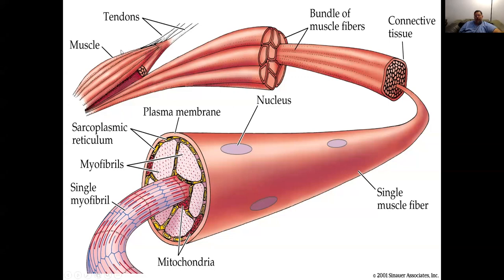Over here you can see our skeletal muscle, which attaches to skeletons through tendons. There's lots of connective tissue around muscles, and each one of these muscle fibers is surrounded by more connective tissue. Then we get an individual muscle fiber, and this is a cell.